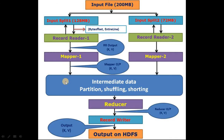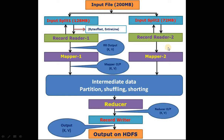Here is the diagram. The input file is 200 MB and Hadoop breaks it into two input splits — input split 1 is 128 MB and input split 2 is 72 MB. Record Reader 1 reads input split 1 and Record Reader 2 reads input split 2. After reading, Record Reader 1 and Record Reader 2 pass their output to Mapper 1 and Mapper 2 respectively. Mapper 1 processes the key-value pairs and passes its output to the intermediate data, and likewise Mapper 2 passes its output to the intermediate data.